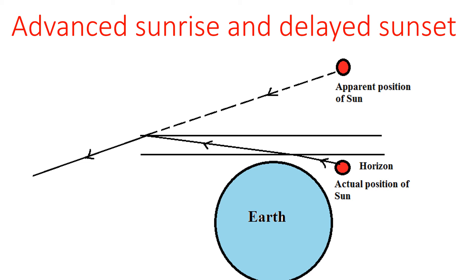Now, advanced sunrise and delayed sunset. Advanced sunrise means the apparent position of the sun is seen before its actual rise, and delayed sunset means the apparent position of the sun is seen after its actual set.